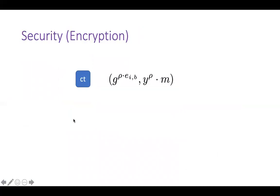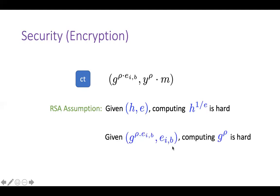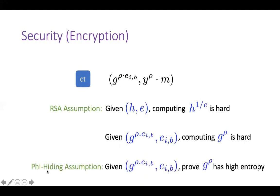For security of encryption: the property says that if the adversary does not have the right decryption key, the ciphertext looks random. From the RSA assumption, given a generator H and exponent E, computing H^{1/E} is hard. Applying this with H = z^{ρ · E_{i,b}} and E = E_{i,b} means computing G^ρ is hard. Under a slightly stronger assumption called the φ-hiding assumption, we can prove that G^ρ also has high entropy, which means y^ρ has high entropy and the second part of the ciphertext looks random.